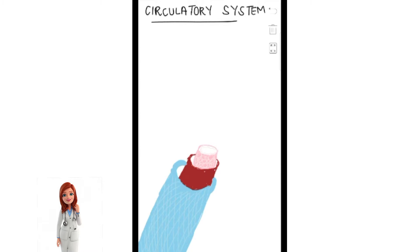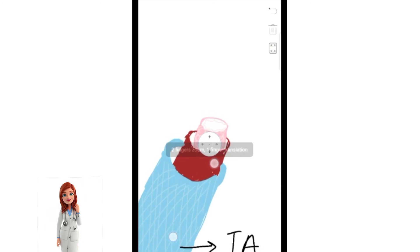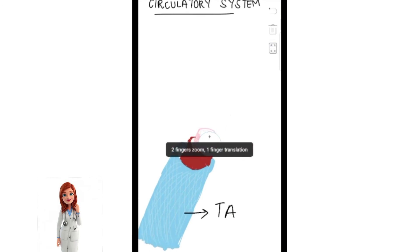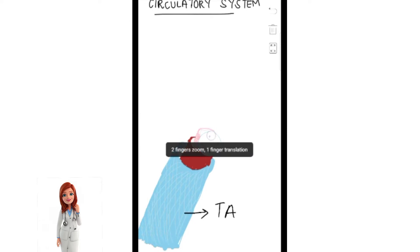When we cross-section a blood vessel, we can see three layers. The outer layer is known as the tunica adventitia. Here you can see fibers very easily — some fibers are collagen and elastin. The second layer, which is inside, is the tunica media, which is the middle layer.